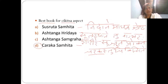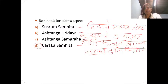Regarding Sushruta Samhita, it is best for Sharira — the Sharira Sthana section of Sushruta is the most important. Regarding Ashtanga Hridayam and Ashtanga Sangraha, Vagbhata's Sutra Sthana section is considered best. So from the same sloka, we can answer options for each Samhita.